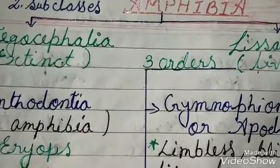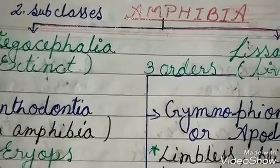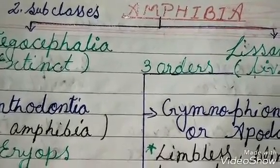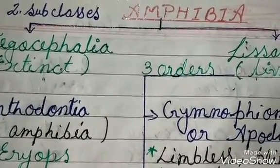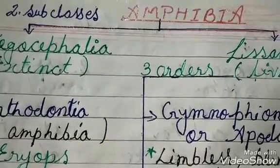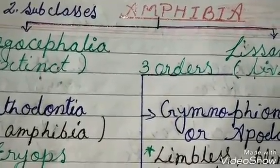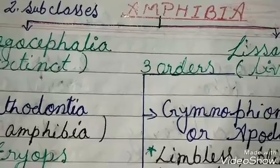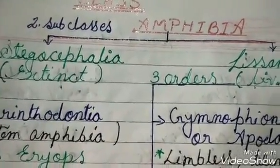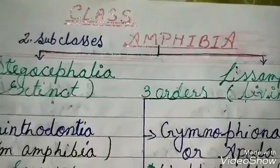The heart is three-chambered — two auricles and one ventricle. Sexes are separate, and development is indirect, occurring through a larval stage. The larva of amphibians is known as tadpoles. That was the basic characteristics of class Amphibia.